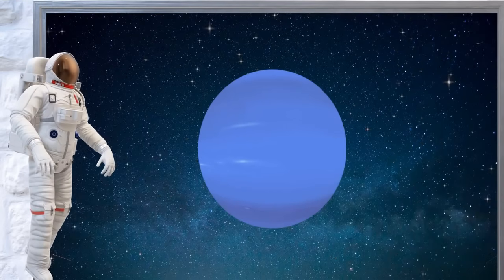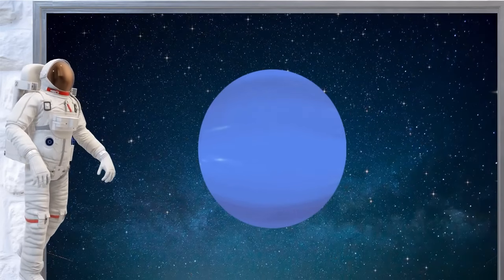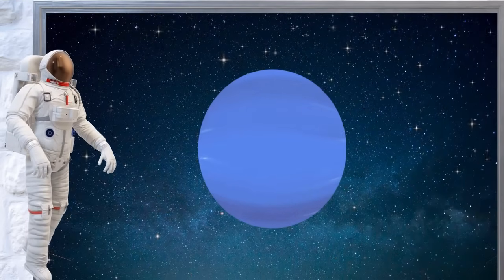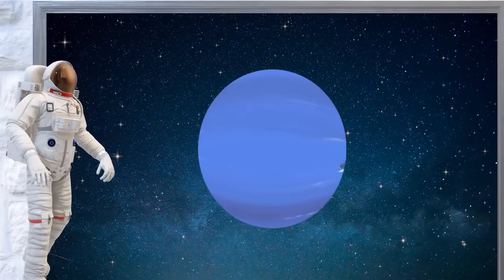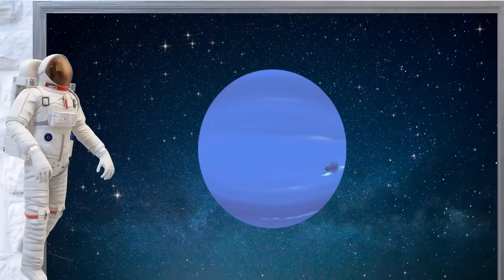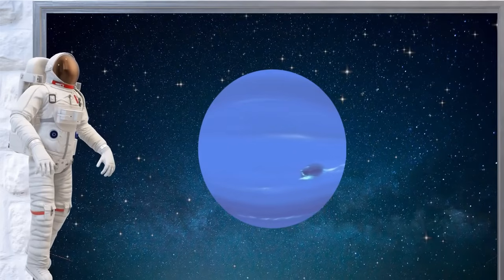Neptune, the last planet, is very, very far from the Sun. It's dark, cold, and windy. It's also blue but a darker blue than Uranus.